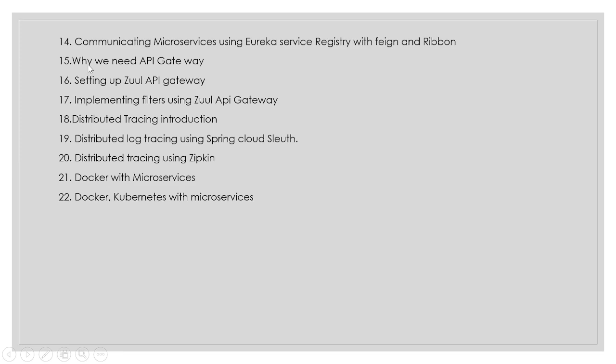Moving to the next section: what is an API Gateway and why we need an API Gateway in microservices — I'll explain in detail. Next, we'll look at setting up the Zuul API Gateway for our microservices, followed by implementing filters using the Zuul API Gateway. I'll explain sample use cases of Zuul API Gateway — how to filter requests — with a complete real-time example.